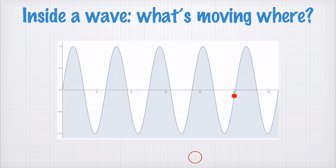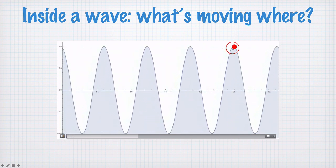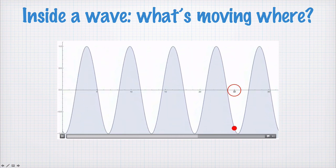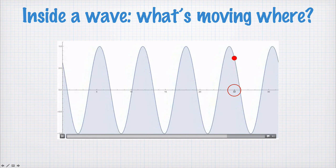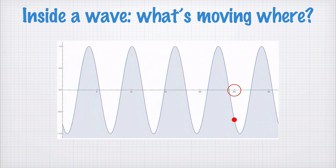Inside a wave, what is moving where? Let's look at a transverse wave again, and we'll track a particle in this wave, and we can see that this particle is moving directly up and down. It doesn't move forwards or backwards, it doesn't move in the direction of the wave horizontally, it's just going up and down the transverse direction of the wave motion.